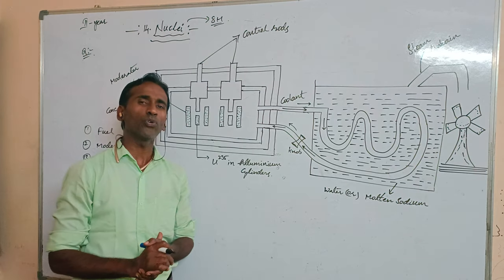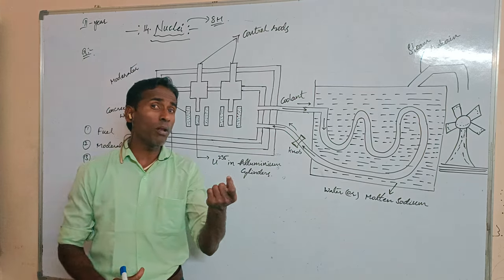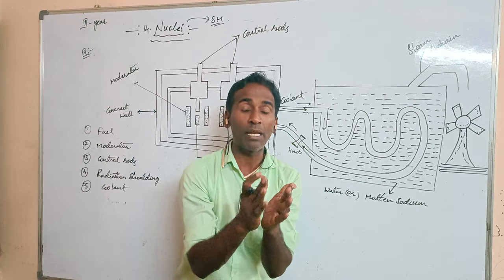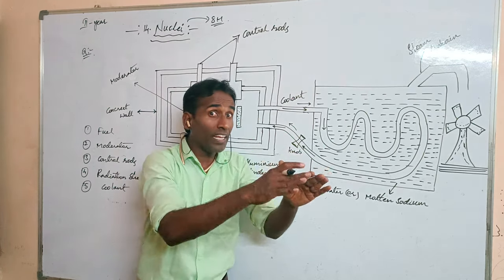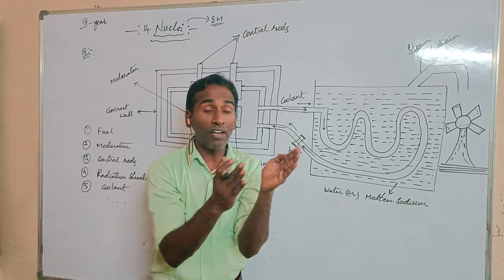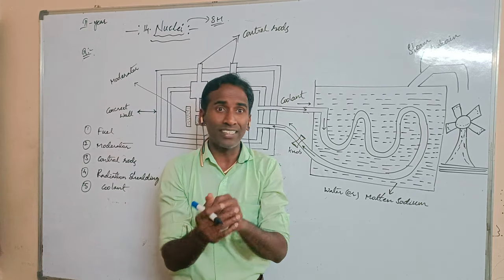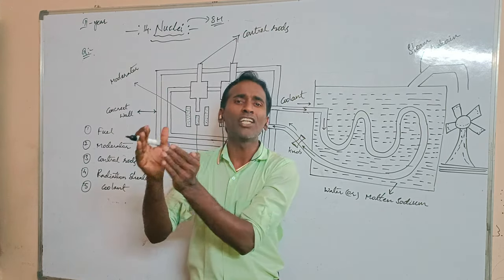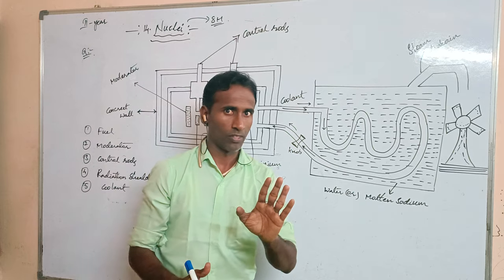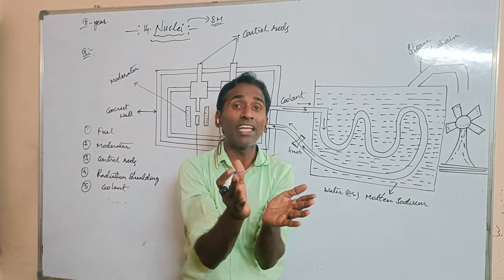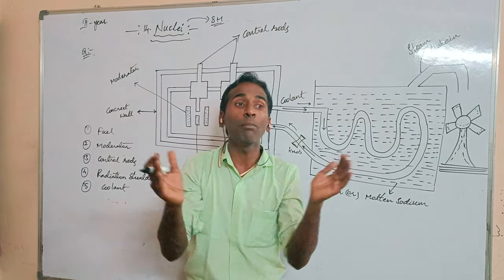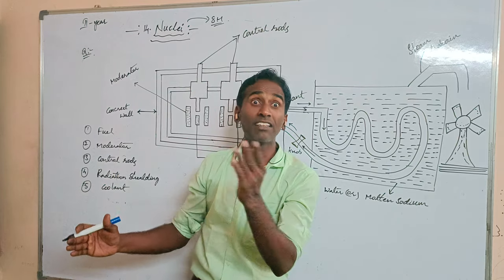First of all, we are taking the fuel — what type of fuel we are using here? It is a fissionable process. What is fission? When heavy nuclei are bombarded with neutrons, they split into two lighter nuclei — that is called fission. Not fusion. Fission means one heavy nucleus splits into two lighter nuclei. Fusion means two lighter nuclei combine to form one heavy nucleus.